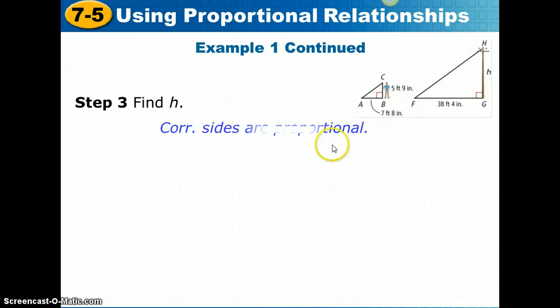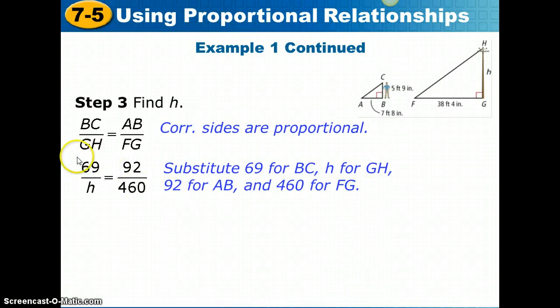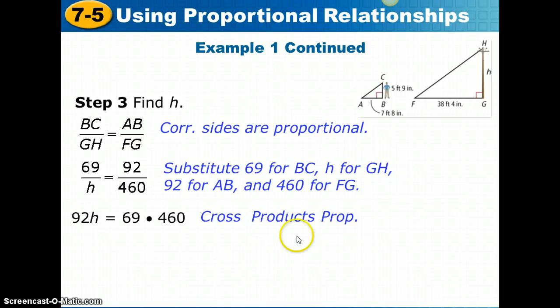To find H, we're going to set up this proportion. Corresponding sides are proportional. BC over GH would have to equal AB over FG. We're going to fill in what we know. BC is 69 inches. H is what we're looking for for GH. 92 inches replaces AB, and 460 inches replaces FG. Remember, we converted these to their numbers in inches. The cross product property says that 69 times 460 must equal 92 times H. We've been working with proportions enough now that after you've gotten to this point, you should be able to find out what H is on your own. Take a minute to pause the video if you need more time.